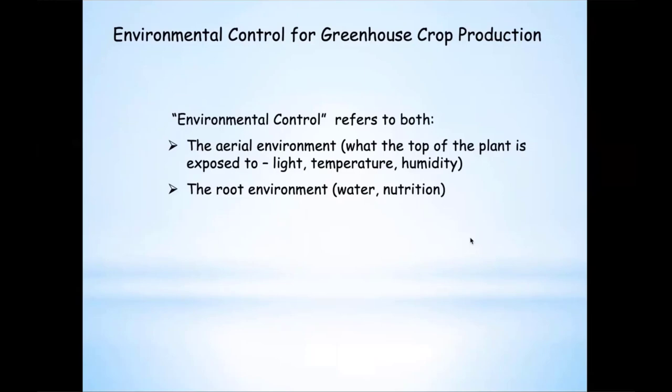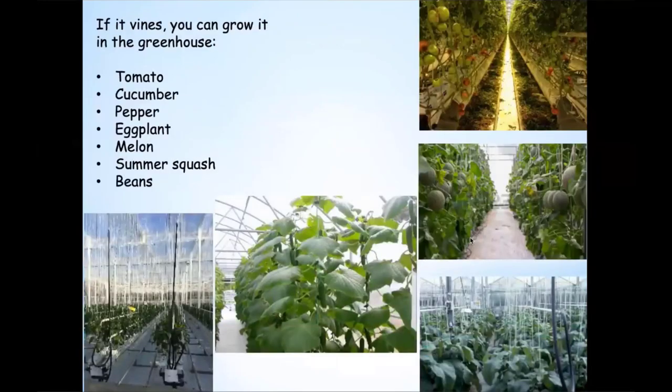And then I'll talk a little bit about the root environment, water and nutritional management. Rose asked me to concentrate on tomatoes, so that's what I'll do today. But there's a number of crops you can grow in a greenhouse in a vine-type situation — eggplant, peppers, melons, cucumbers, et cetera. But we'll talk mainly about tomatoes today.